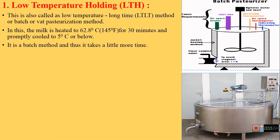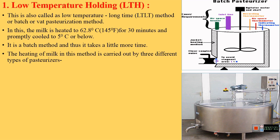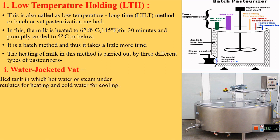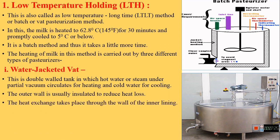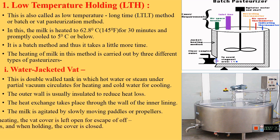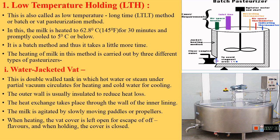As this process is carried out batch-wise, it takes comparatively more time. The heating of milk in this method is carried out by three different types of pasteurizers. The first is the water-jacketed vat (WAC) type — a double-walled tank in which hot water or steam under partial vacuum circulates for heating, and cold water for cooling. The outer wall is insulated to reduce heat loss. Heat exchange takes place through the inner wall lining, and the milk is agitated slowly by moving paddles or propellers. While heating, the vat cover is left open for escape of off-flavors; while holding, the cover is closed.